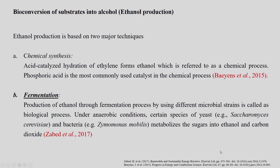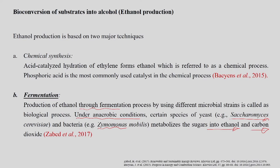Phosphoric acid is the most widely used catalyst for the chemical process — the acid-catalyzed hydration of ethylene to produce ethanol. An alternative to this chemical process is the fermentation technique, where bacterial strains such as Zymomonas and yeast species like Saccharomyces cerevisiae metabolize sugars into ethanol and carbon dioxide under anaerobic conditions.